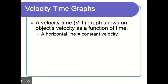We're going to see different types of lines on this graph. The first type of line is a horizontal line. A horizontal line means that we have a constant velocity. The slope of a velocity-time graph gives us acceleration, so if we have no acceleration, that means our velocity is not changing, which means we'll have a horizontal line.